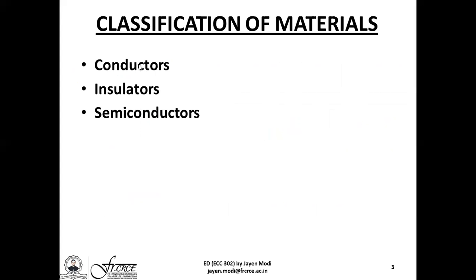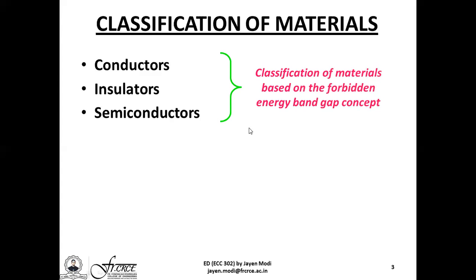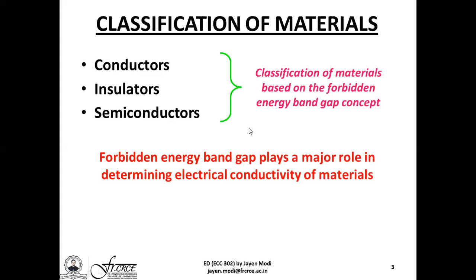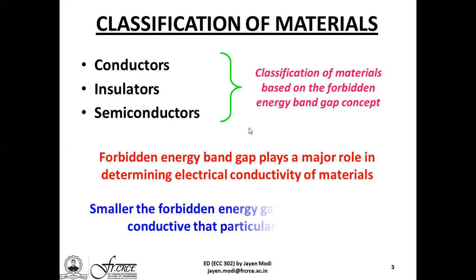If we look at the category of conductors, insulators, and semiconductors, although we are pretty sure that this classification is basically electrical, we also have to go a bit deeper into the technical aspects by understanding that these materials are also classified based on something called the forbidden energy bandgap concept. It is this particular forbidden energy bandgap which plays a major role in determining the electrical conductivity of materials. The smaller the forbidden energy bandgap, the electrical conductivity for that particular material will be extremely high.